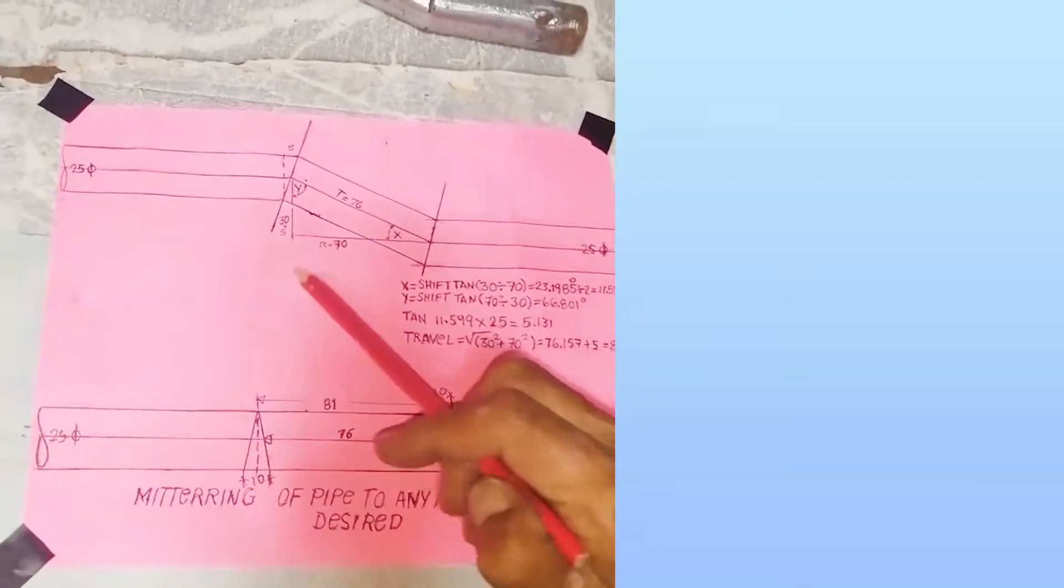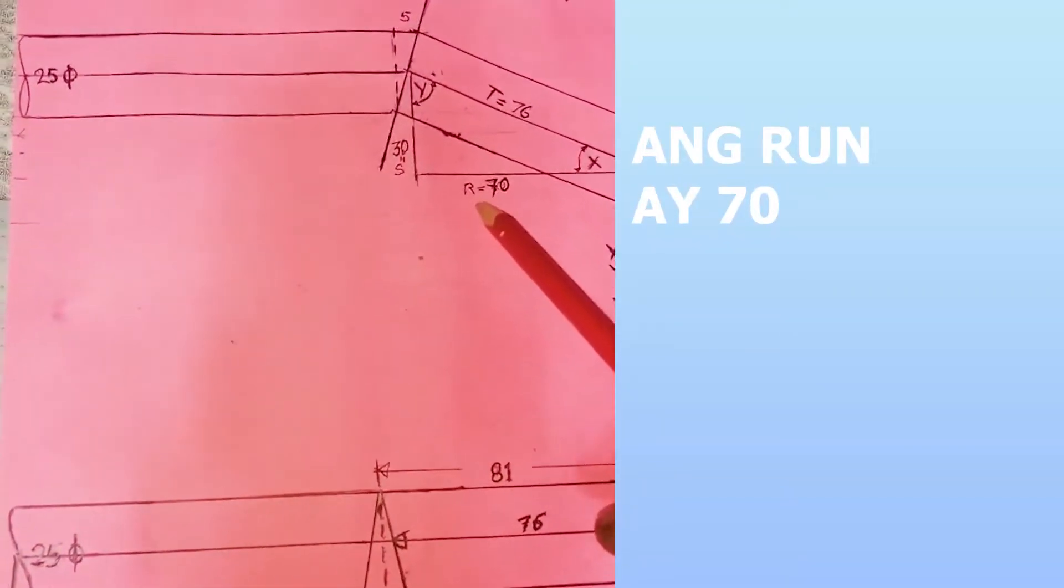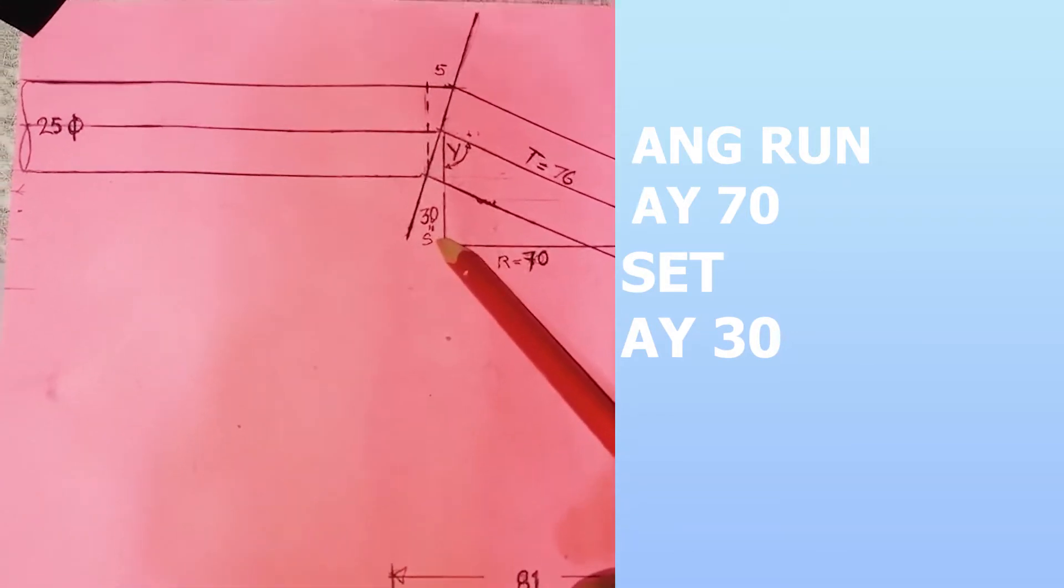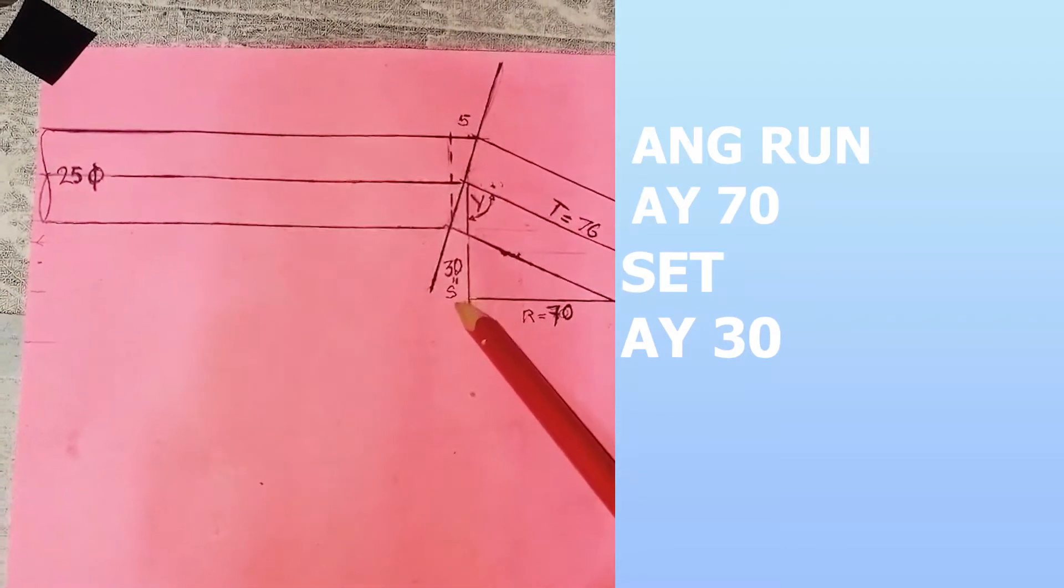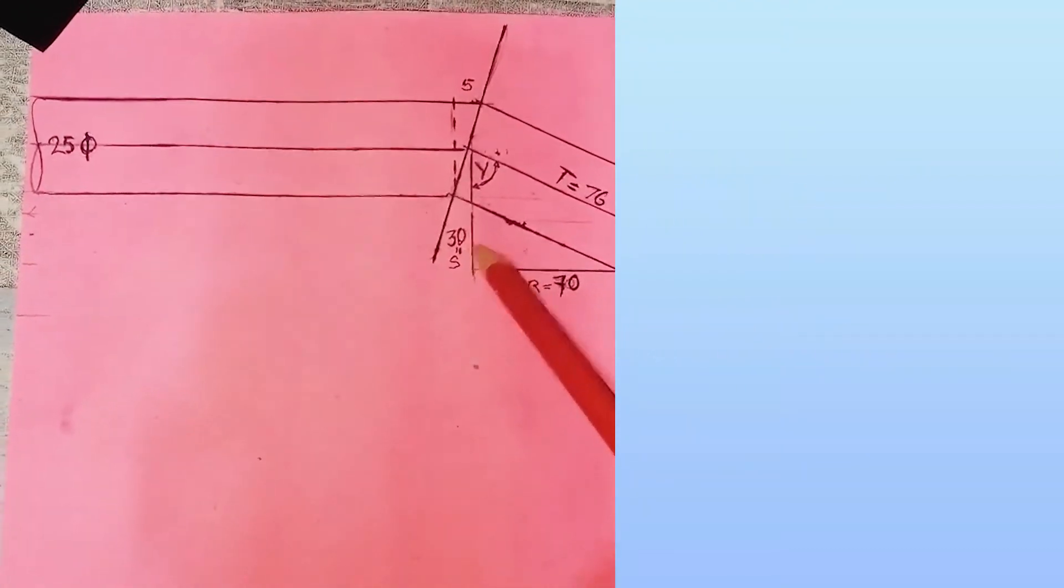Ngayon, ito yung run nya, 70, yung set 30mm. Naka-offset yan ng 30mm.